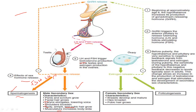On the female side, FSH stimulates the production of estrogen. Estrogen is responsible for female secondary sexual characteristics: breast development, broader hips, and pubic hair growth. FSH also helps in folliculogenesis.